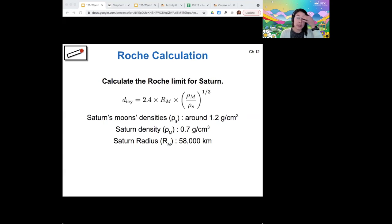All right. So I want to give you a chance to apply this formula because we're going to use it in the lab today. All right. So if we want to use this equation, we are given the radius of Saturn. We're given the density of Saturn and then the density of a typical icy moon.